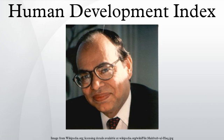Under the old method, last used in its 2009 report, the HDI combined three dimensions: Life Expectancy at Birth as an index of population health and longevity; Knowledge and Education as measured by the Adult Literacy Rate and the combined primary, secondary, and tertiary gross enrollment ratio; and Standard of Living as indicated by the natural logarithm of gross domestic product per capita at Purchasing Power Parity.